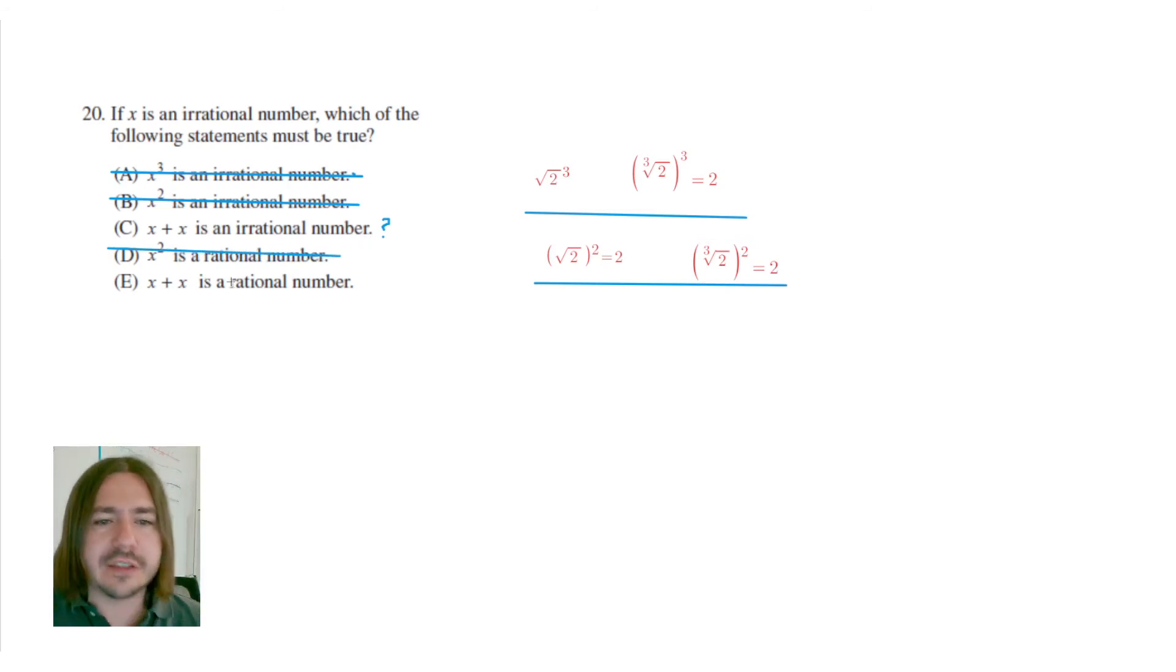Now, we have x plus x is a rational number. Well, we kind of already talked about x plus x. If I have the square root of 2, and I just add that to itself, I'm going to get two square roots of 2. That is irrational. So it definitely cannot be rational. And that leaves us with one potential answer choice here, which is choice C. x plus x is an irrational number. That must be true if x is irrational.